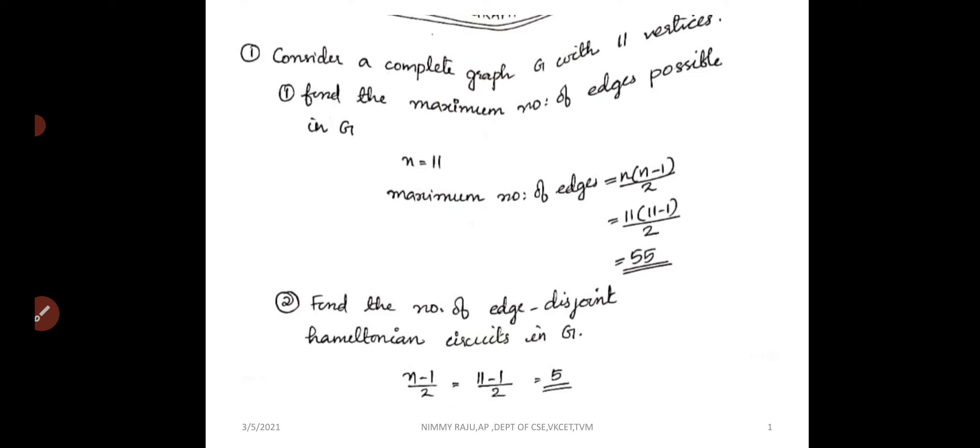Okay, so we have n equal to 11 vertices. To find the maximum number of edges, the equation is n into n minus 1 by 2. So the answer is, we have 11 vertices, 11 into 11 minus 1 by 2, that is 55.